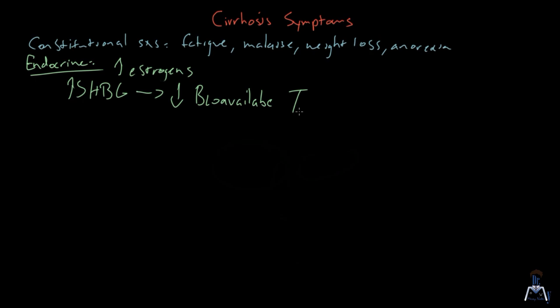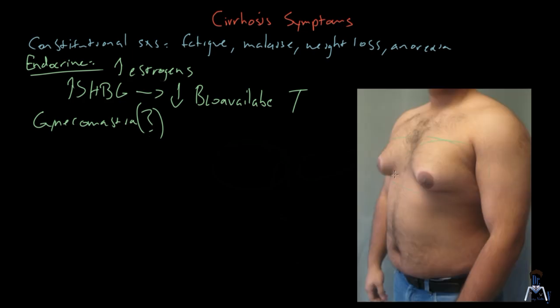You have increased estrogen and decreased testosterone. What results from this? You get gynecomastia. I'm going to put a question mark in parentheses here because although 60% of cirrhotic patients do have gynecomastia, this is pretty much equivalent to non-cirrhotic patients as well. However, keep in mind that spironolactone, a diuretic that is commonly used for cirrhotic patients with ascites, also has gynecomastia as a side effect.